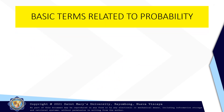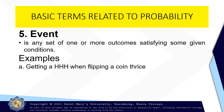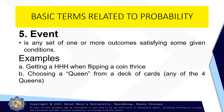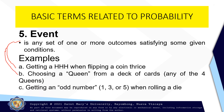We have the fifth term, which is called the event. Event is any set of one or more outcomes satisfying some given conditions. For example, getting head-head-head when flipping three coins — that is an event. Another example: choosing a queen from a deck of cards, or any of the four queens — that is also an event. And getting an odd number, one, three, or five, when rolling a die — that is an event.